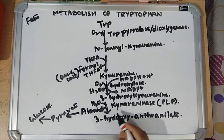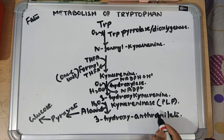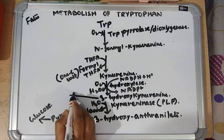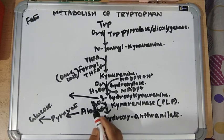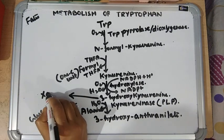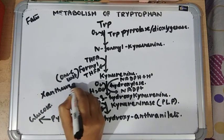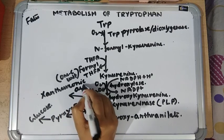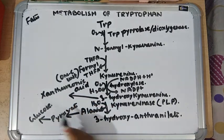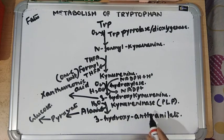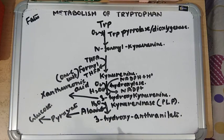There is an important note: kynureninase is dependent on vitamin B6. So if there is vitamin B6 deficiency, these steps cannot occur, and 3-hydroxykynurenine is instead converted into xanthurenic acid. Xanthurenic acid is formed in vitamin B6 deficiency. Also, since niacin is produced through this pathway, vitamin B6 deficiency leads to additional vitamin B3 deficiency.